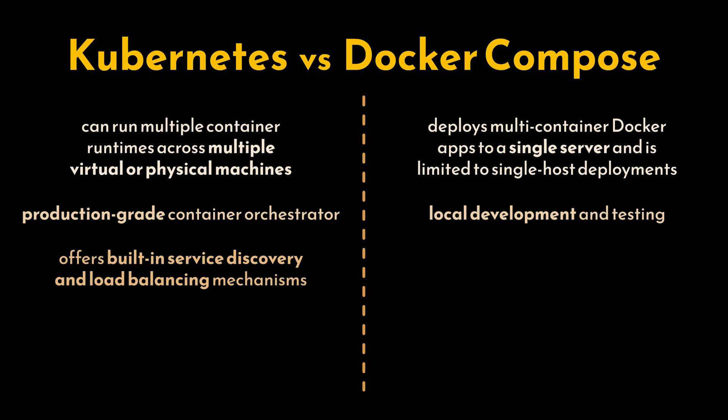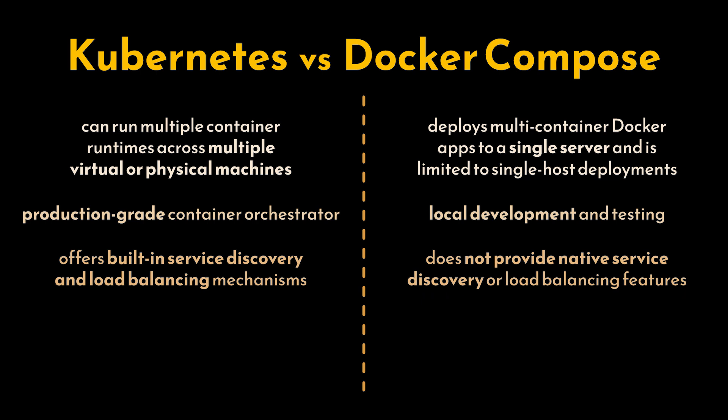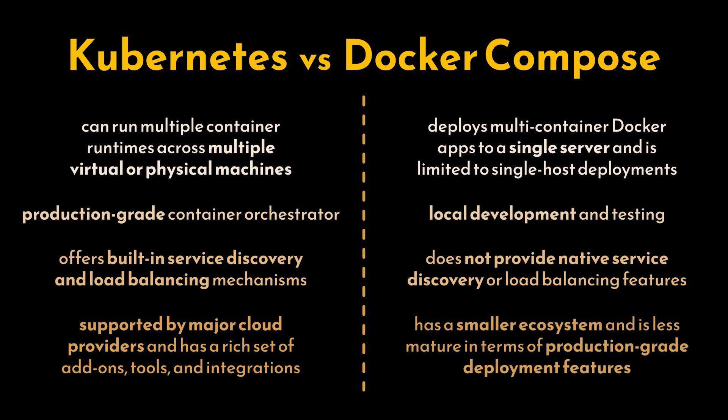Kubernetes offers built-in service discovery and load balancing mechanisms — it automatically assigns a unique DNS name to each service and distributes traffic across available instances. Docker Compose relies on the Docker networking stack and does not provide native service discovery or load balancing. Kubernetes also has a vast ecosystem and thriving community, supported by major cloud providers with a rich set of add-ons, tools, and integrations. In contrast, Docker Compose, while widely used for local development, has a smaller ecosystem and is less mature in terms of production-grade deployment features.